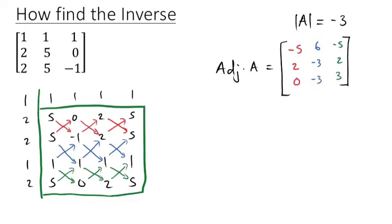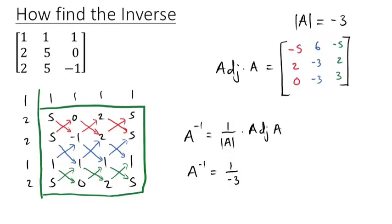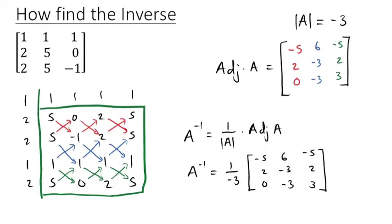Now that I have the adjoint, I can easily find the inverse. The inverse of matrix A is given by one over the determinant multiplied by the adjoint of A. So A inverse equals one over minus three, multiplied by the adjoint: minus five, two, zero, six, minus three, minus three, minus five, two, three. This is the inverse of this particular matrix. You can go ahead and divide everything by negative three, or leave it as it is — it's still fine.